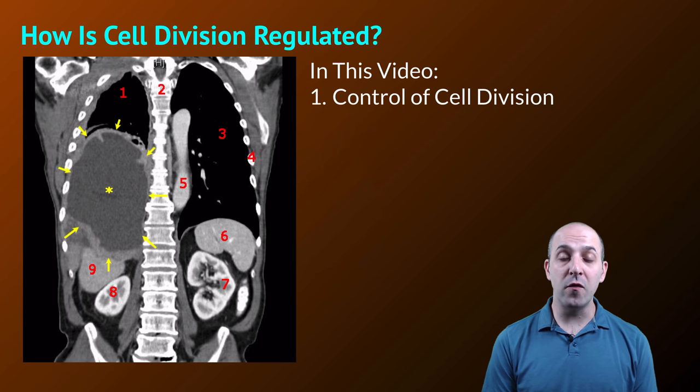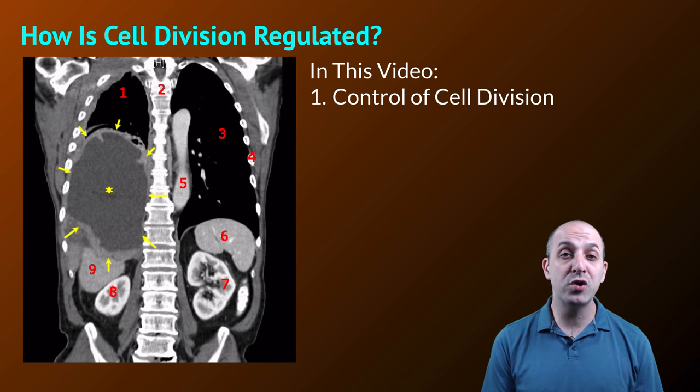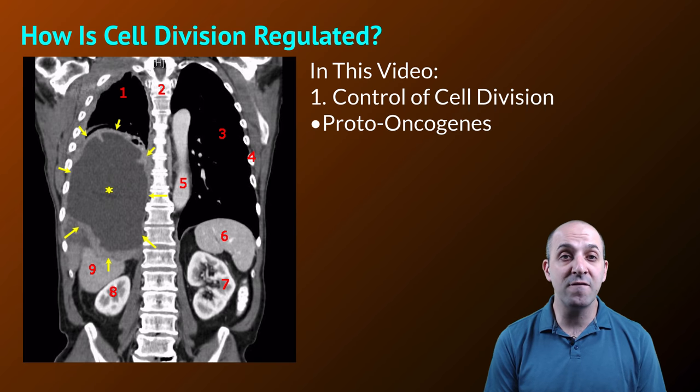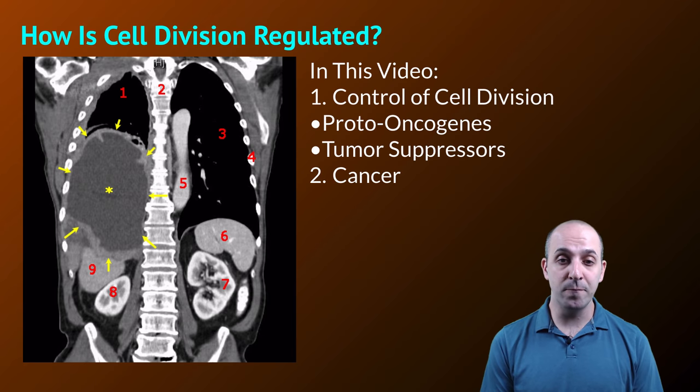In this video, we're going to talk about the control of cell division and how that's accomplished, and we're going to look at two particular types of genes. We're going to look at proto-oncogenes and how they function in the cell, and then we're going to look at tumor suppressors and how they function. Finally, we're going to talk a little bit about cancer, where cancer comes from, and why cancer happens.